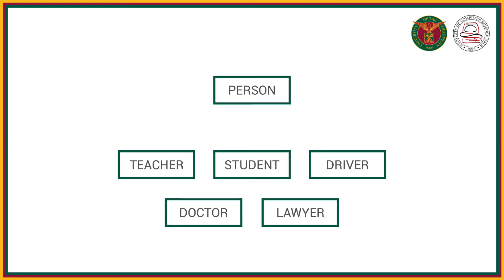Going back to our previous example, all five entities — teacher, student, driver, doctor, and lawyer — can now be subclasses of our superclass person. In that way, we minimize repetition of attributes and simplify the organization of our data.